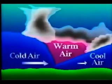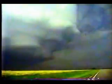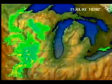Air masses moving from areas of high pressure to areas of low pressure bring weather from one location to another. Air masses take on the characteristics of the areas over which they are formed. As air masses make contact with each other, warm and cold fronts are formed. Clouds and precipitation may result.